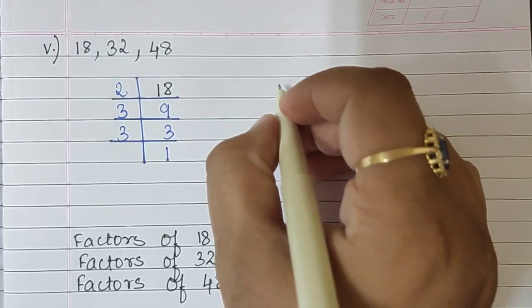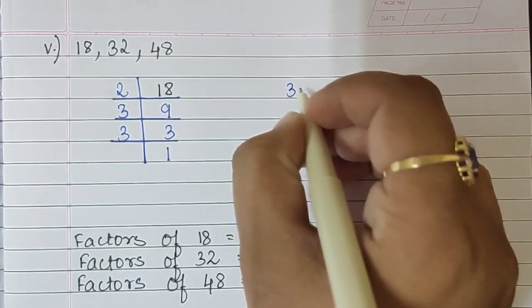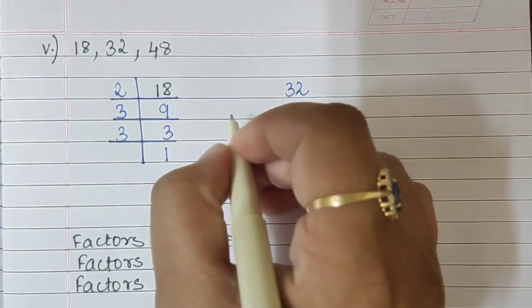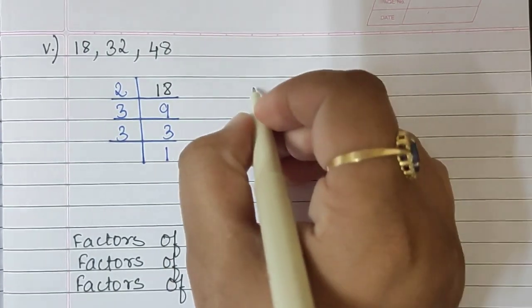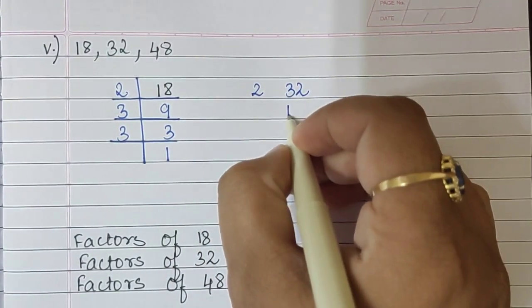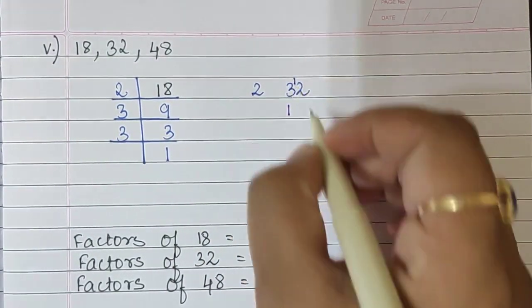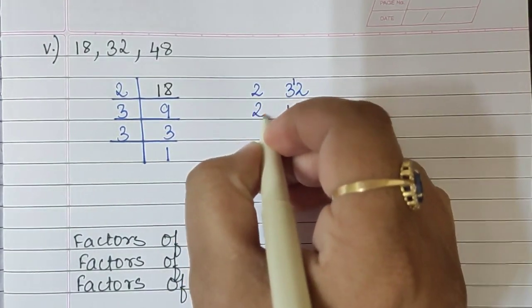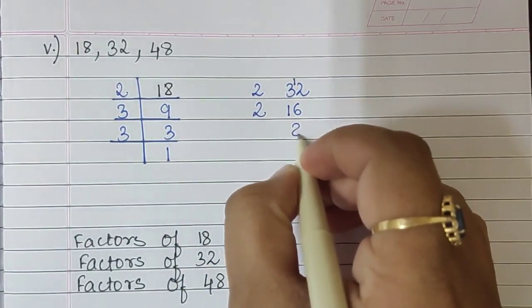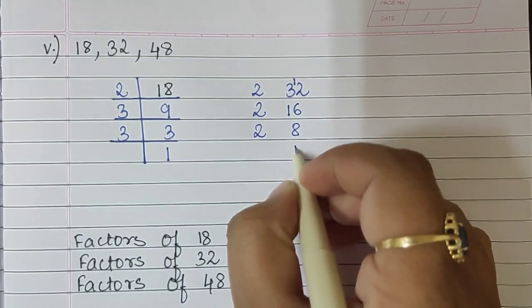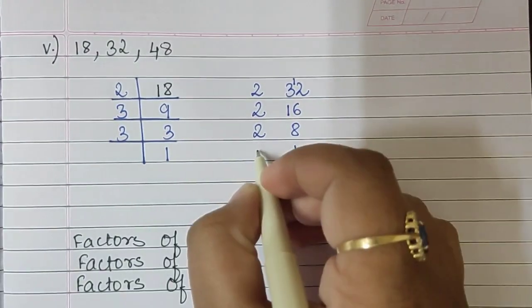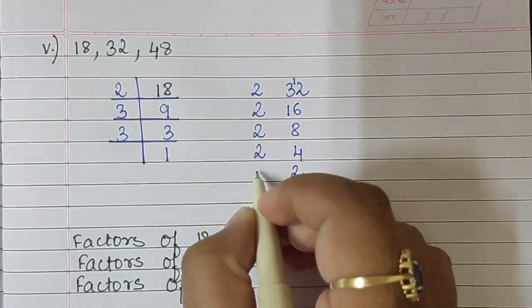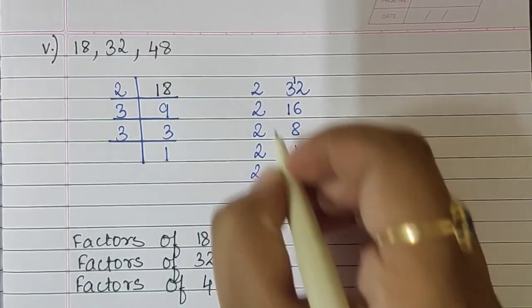The next number is 32. So I will write 32. 2 sixteens are 32, 2 eights are 16, 2 fours are 8, 2 twos are 4, and 2 ones are 2.